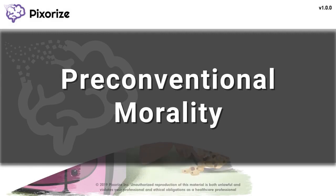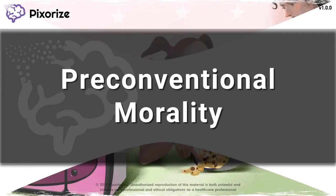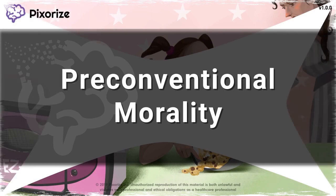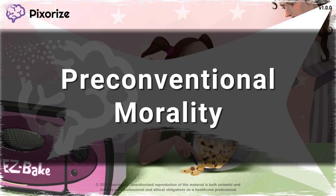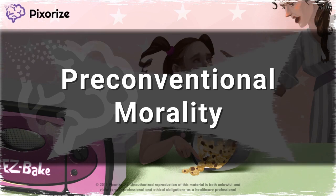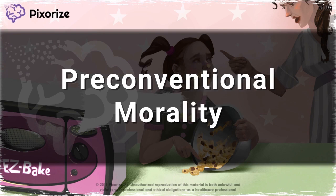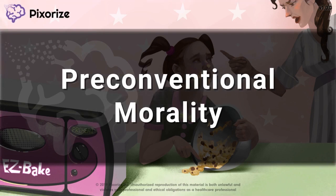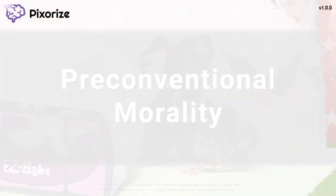The pre-conventional stage is the first stage of Kohlberg's model of moral development, and the morality of an action is defined by the direct consequences on the self in an egocentric manner. It's important to remember the differences between the pre-conventional, conventional, and post-conventional stages of morality. In this visual mnemonic, I'll orient you to everything you need to know about pre-conventional morality so you can crush it on test day.